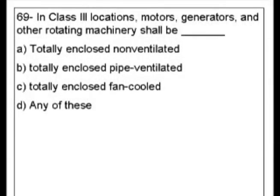Question 69. In class 3 locations, motors, generators, and other rotating machinery shall be blank. A. Totally enclosed, non-ventilated. B. Totally enclosed, pipe-ventilated. C. Totally enclosed, fan-cooled. Or D. Any of these.